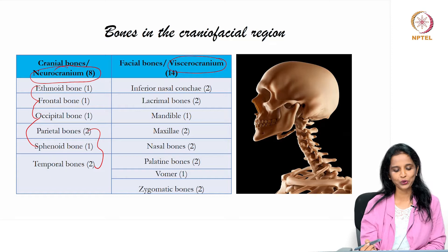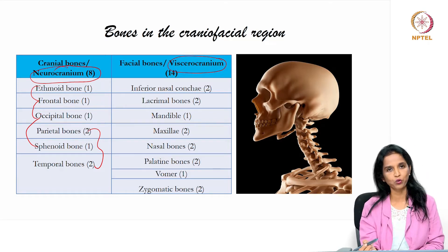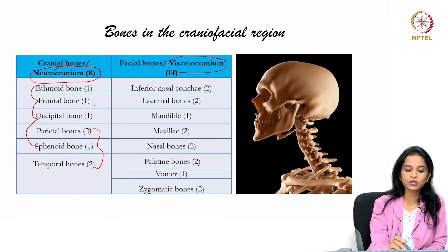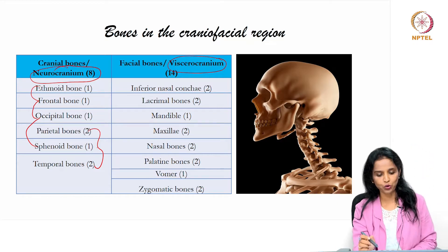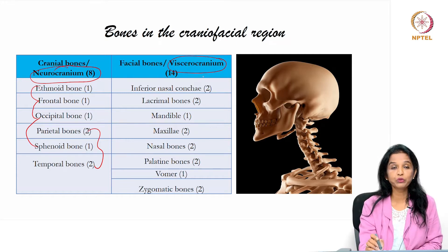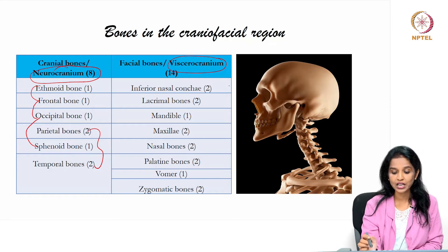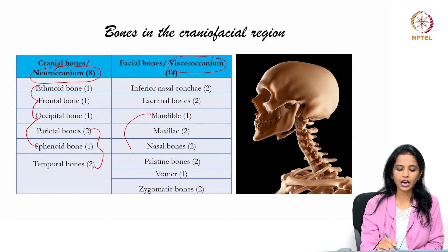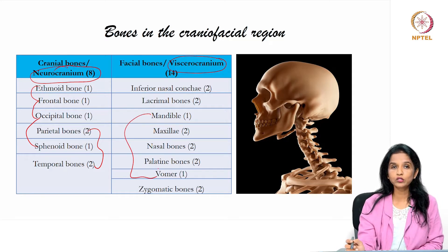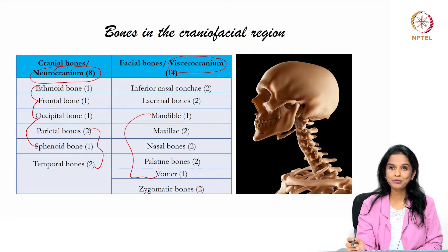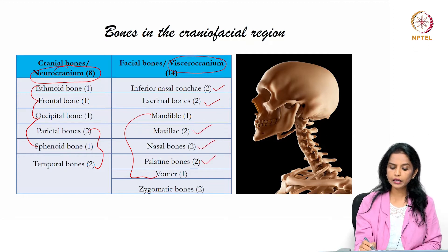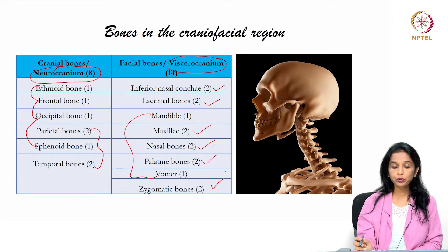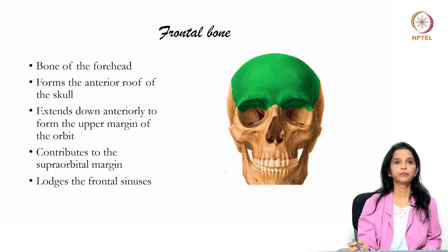The 4 unpaired cranial bones are the ethmoid bone, frontal bone, occipital bone, and sphenoid bone. The paired bones are the parietal and temporal bones. Moving on to the viscerocranium or splanchnocranium, which is made up of 14 bones: 2 unpaired bones — the mandible and the vomer — and paired bones including the inferior nasal conchae, lacrimal bones, maxilla, nasal bones, palatine bones, and zygomatic bones.